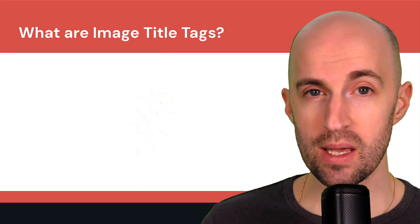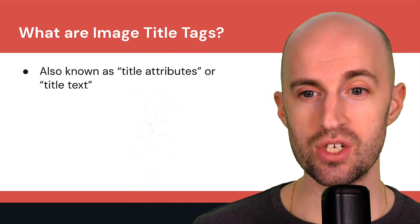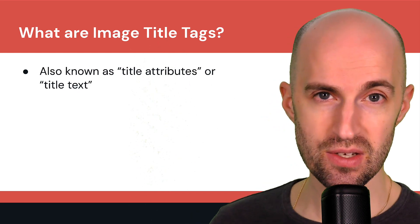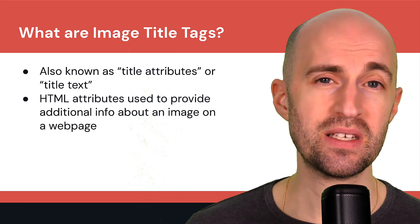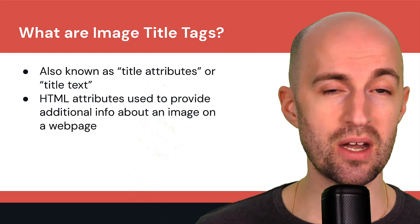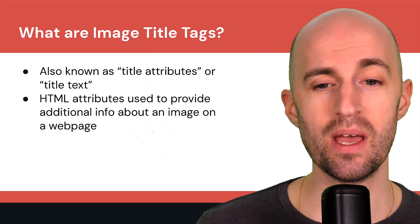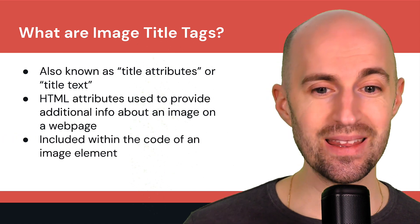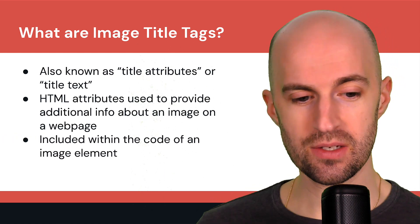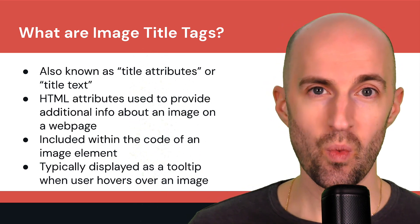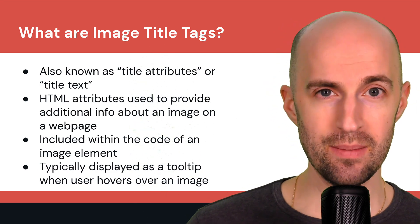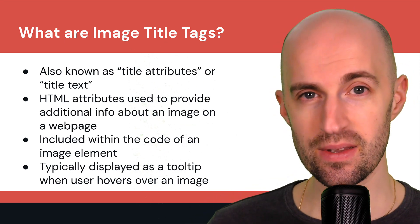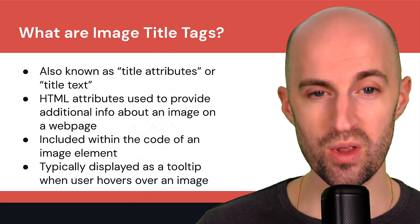So what are image title tags? Basically, they're also known as title attributes or title text when it comes to images, and they're HTML attributes that are used to provide additional information about an image on a web page. It's included within the code of an image element. Typically, it's displayed when you hover over an image — a little tooltip pops up with some text, that's the image title that pops up for the user.